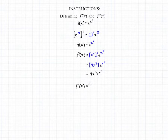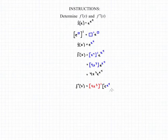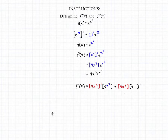For our second derivative, this is going to get a bit more complicated because we have to use the product rule. The first half of our product rule is going to be that 4x cubed — we're going to take the derivative of that, multiplied by e raised to x to the fourth. Then we're going to add that to 4x cubed multiplied by the derivative of e raised to x to the fourth.